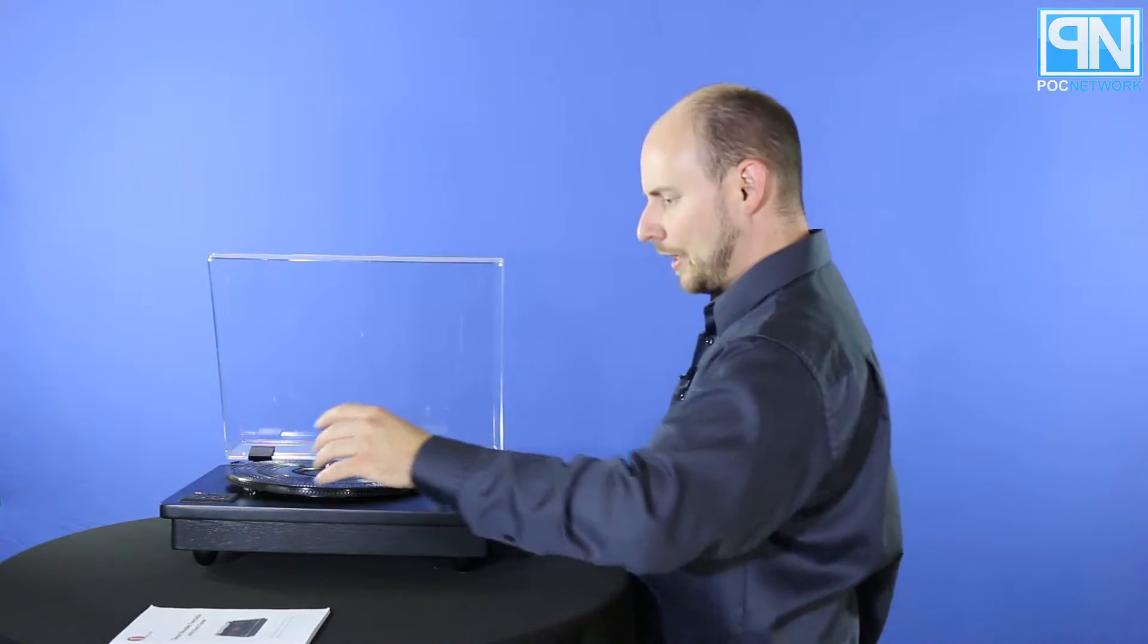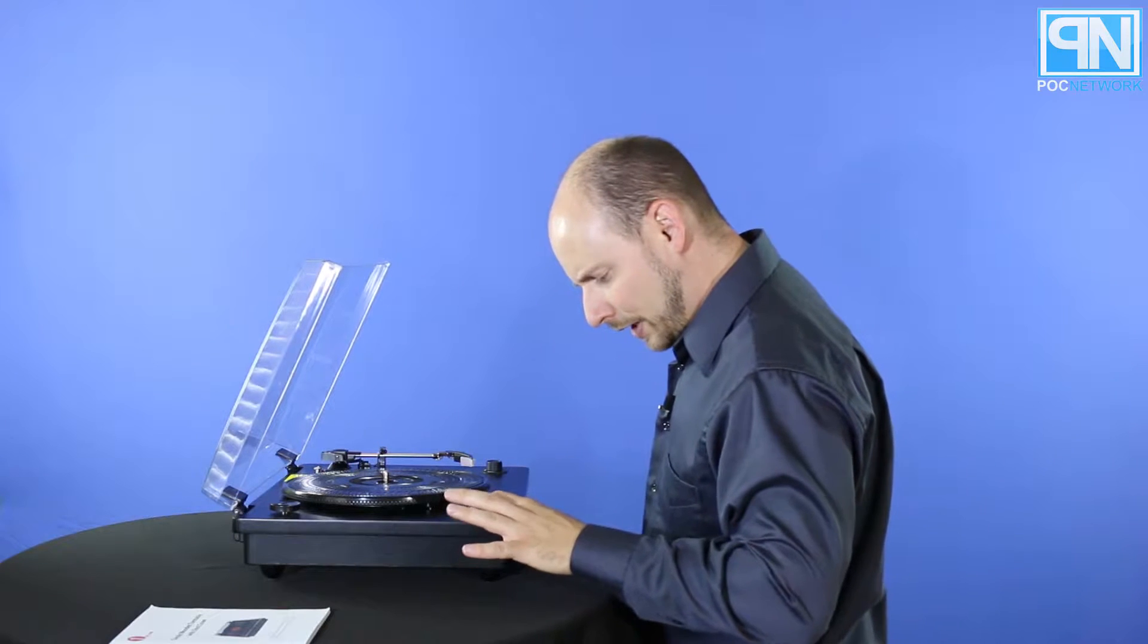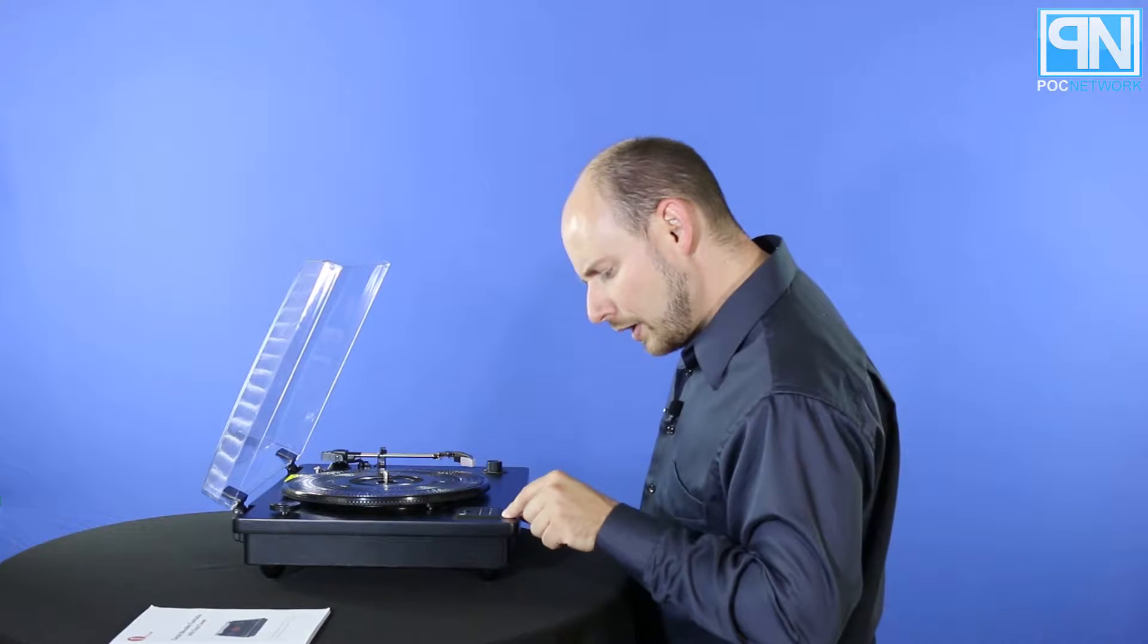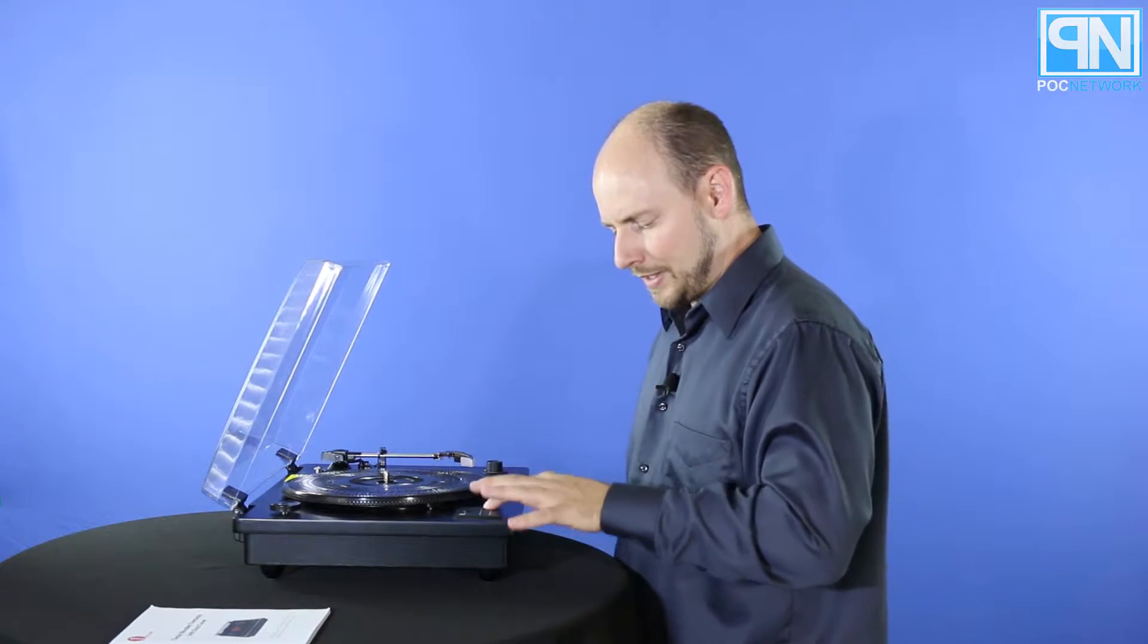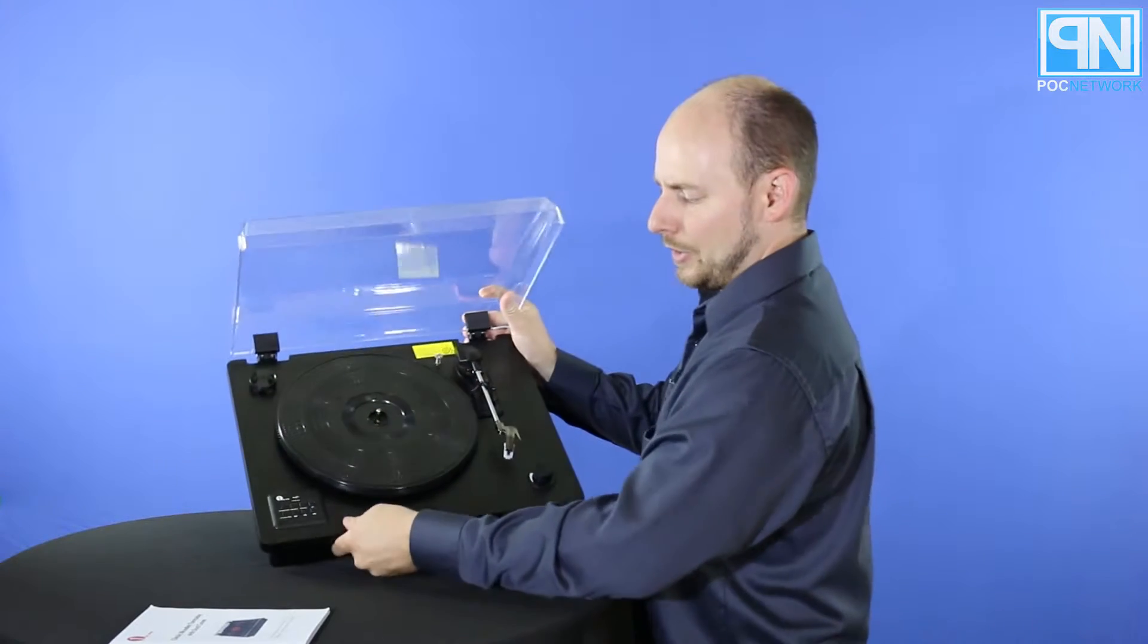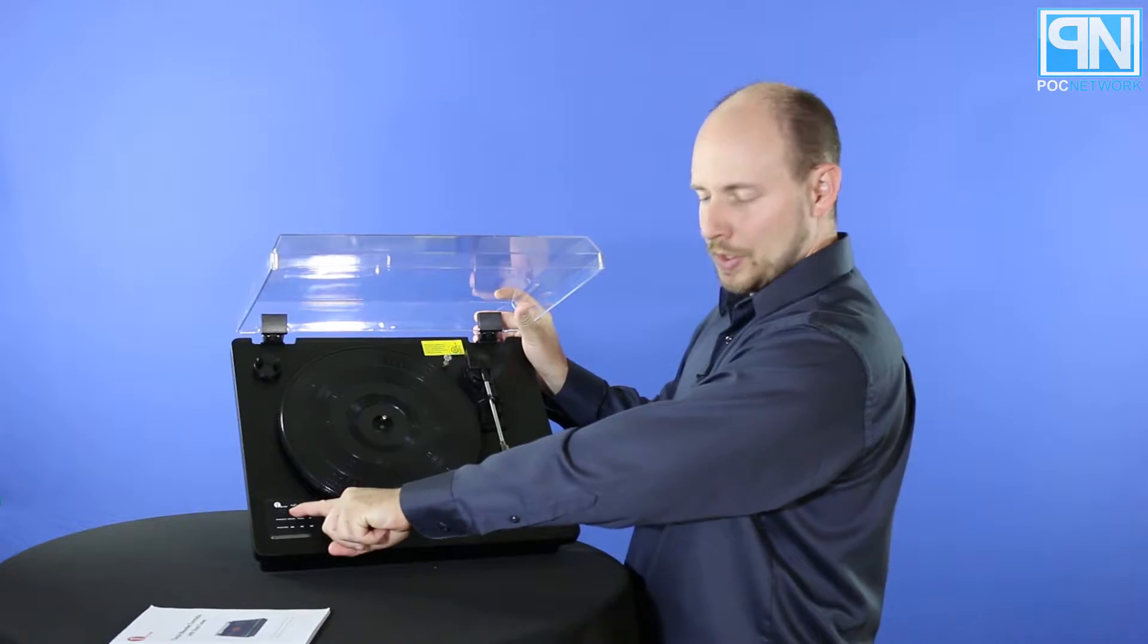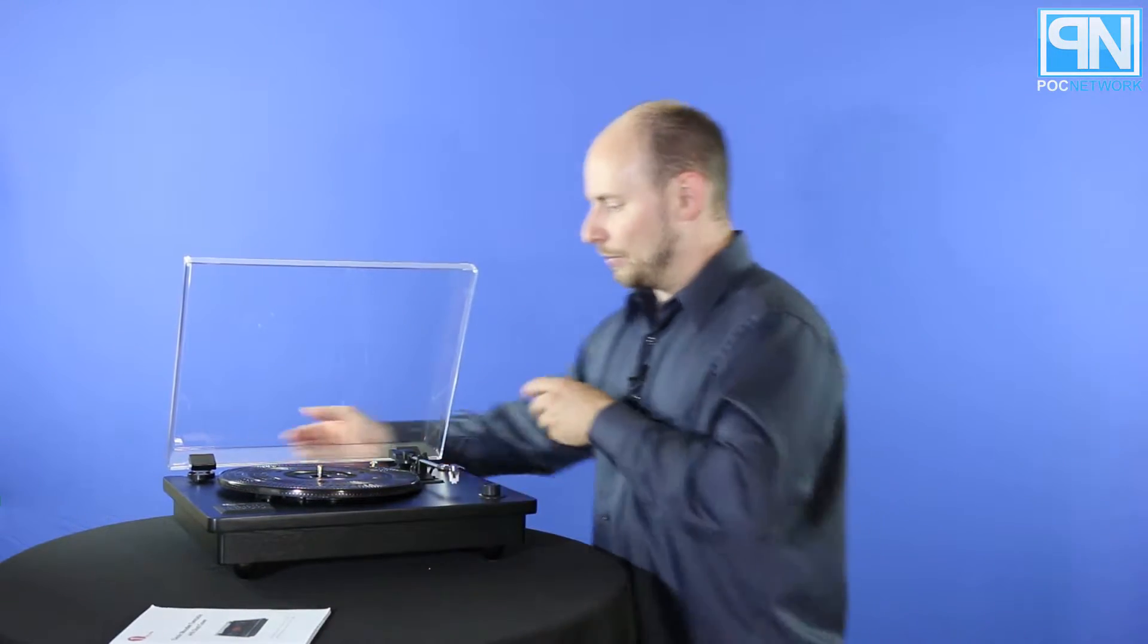You have some options right here on the side: standby, on, USB, MP3, recording, phono, Bluetooth, and phone record. Then you have previous track, play/pause, and next track. So you have a total of eight buttons, and right here you have a USB Type-A input, which is your average USB input.